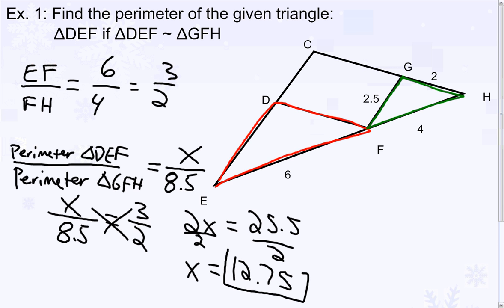This represents the perimeter of triangle DEF. Therefore, if we add all three sides of triangle DEF, it equals 12.75. We could also find each side of triangle DEF by using our scale factor of 3 halves and comparing the sides of 2.5 and 2 to the missing sides.